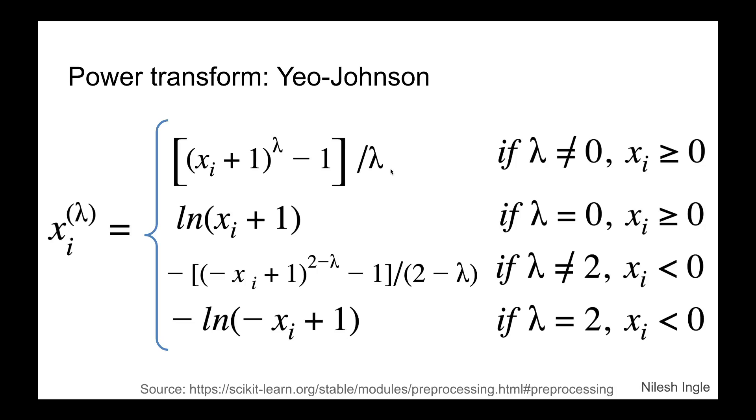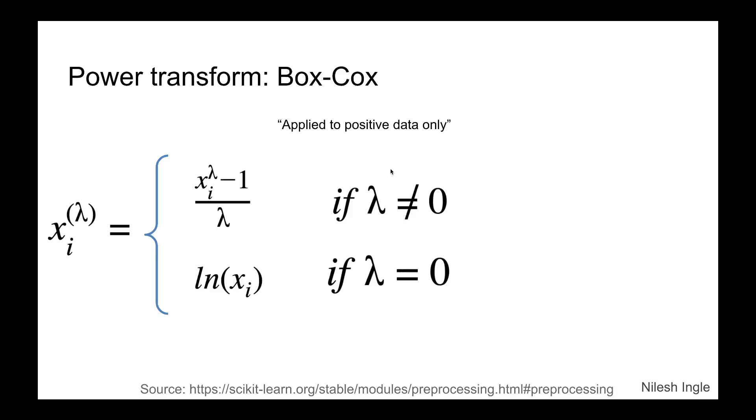Now for Box-Cox transform, it can be applied only to positive data. So the lambda value can be either positive or negative, but the x values that are in the dataset, they can be only positive values. So in that case, we can use either of these two functions to transform the data. And in the Python implementation, we'll use the very first function to perform the power transform on our dataset.